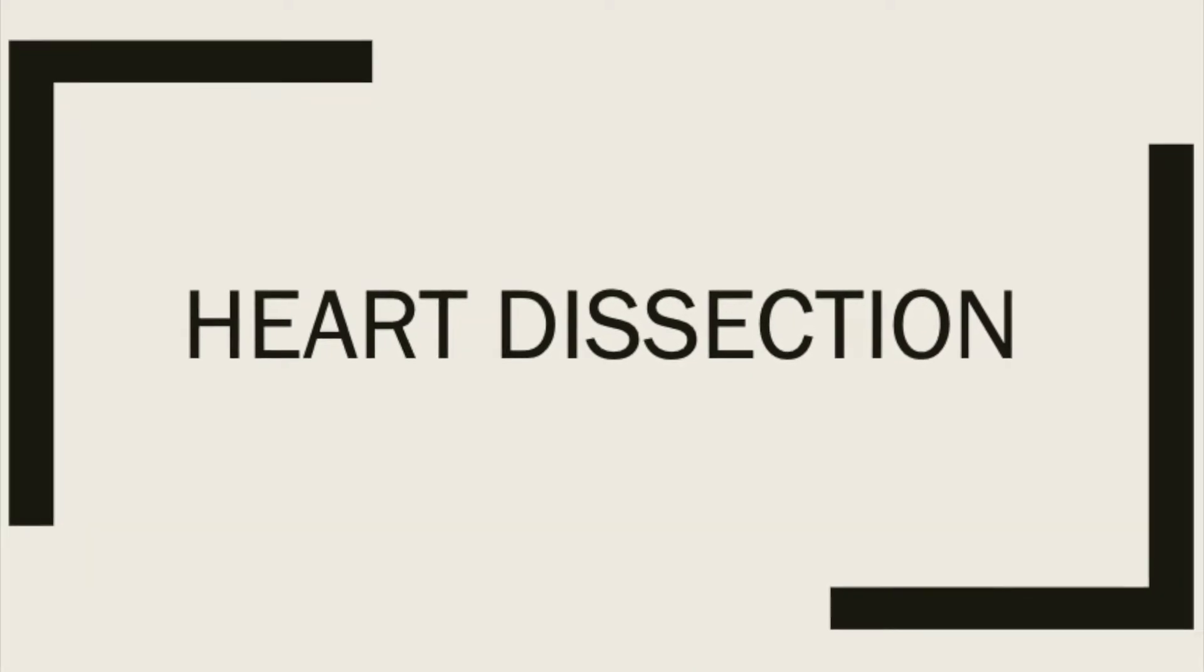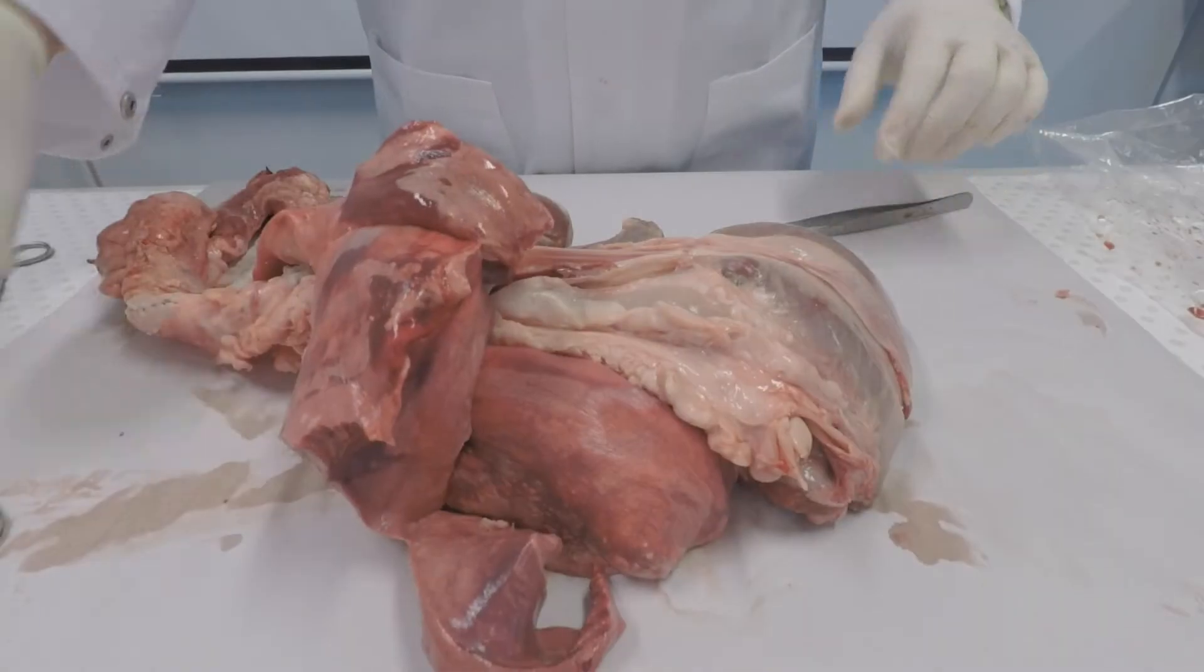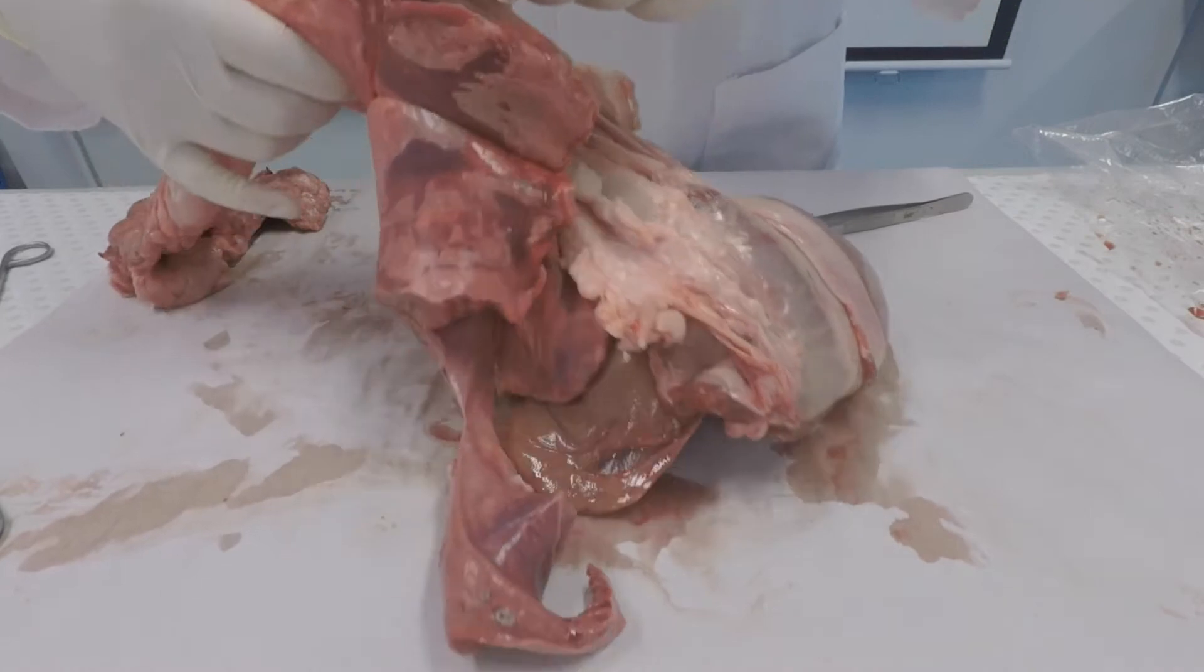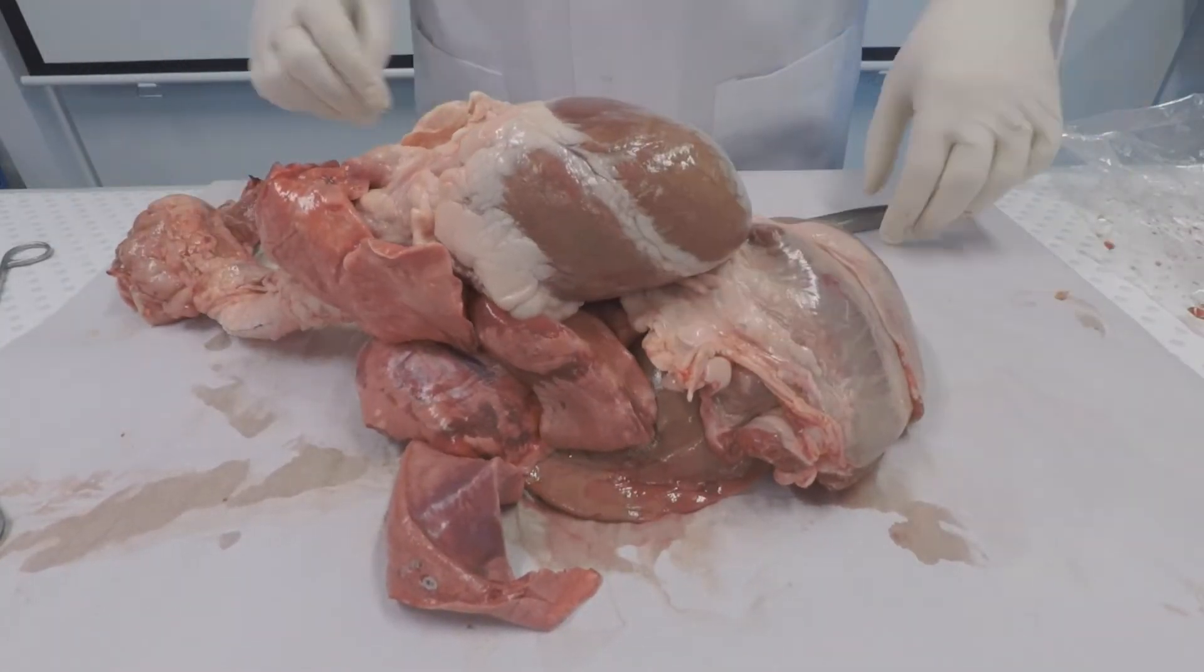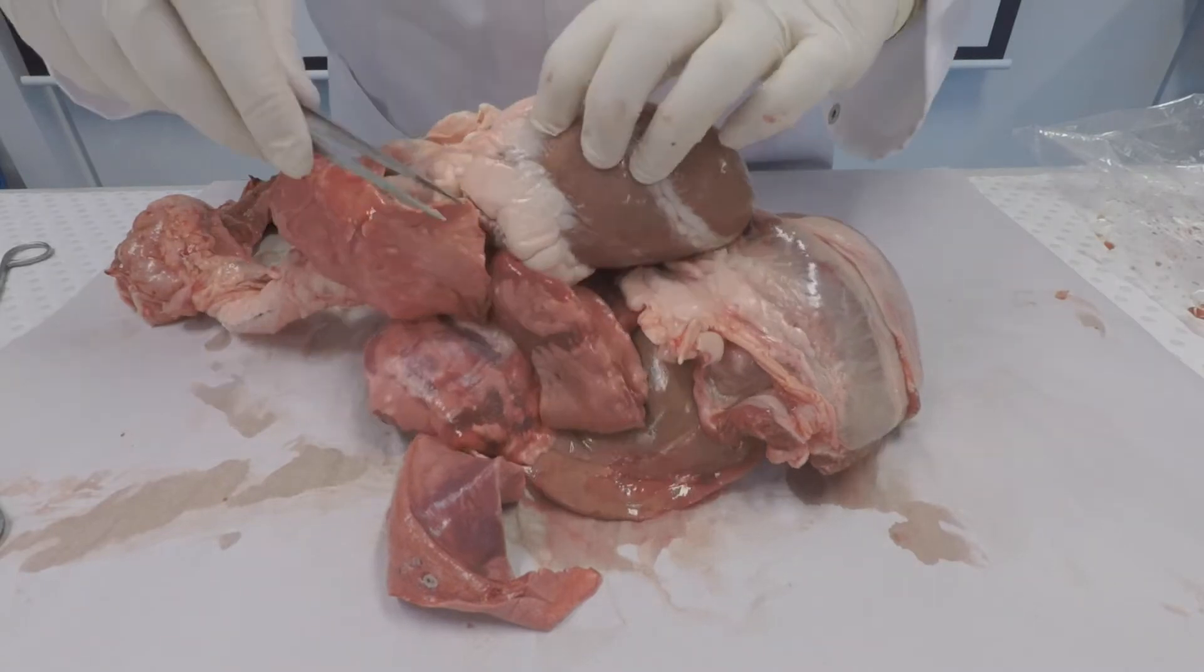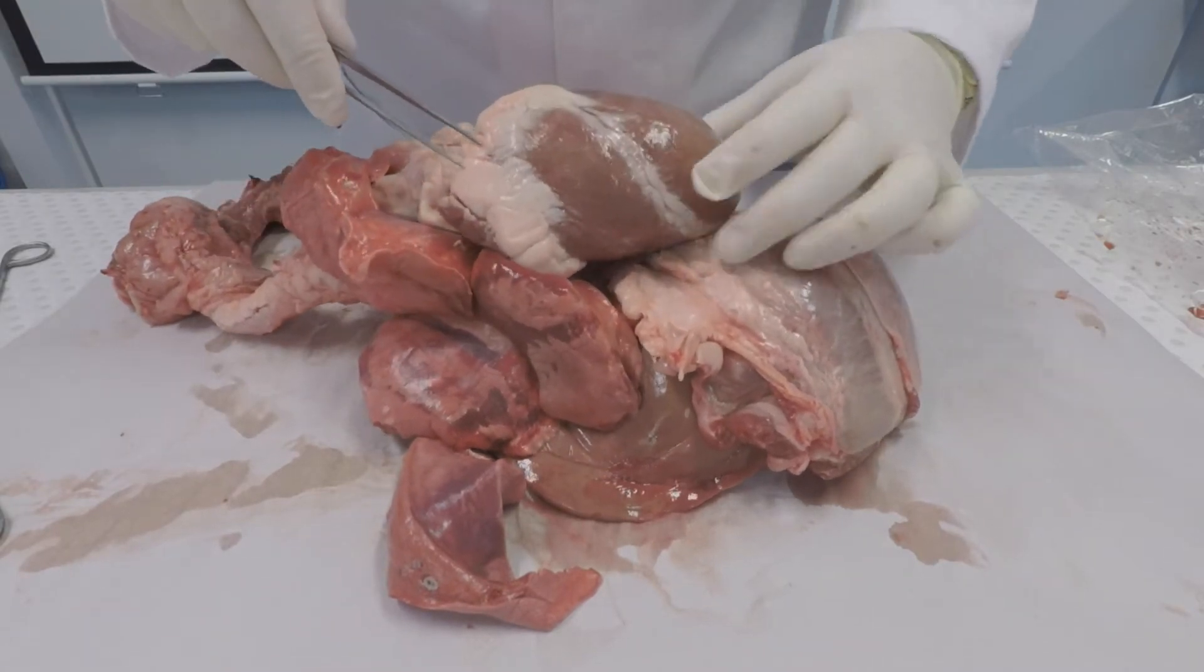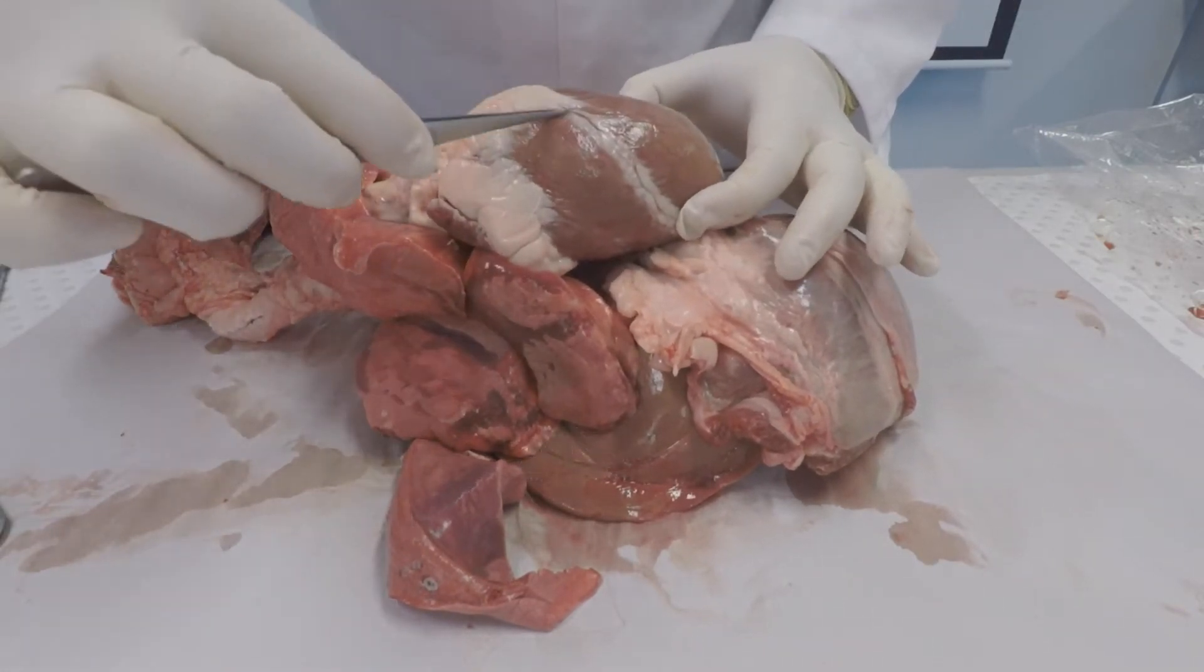Today we're going to be doing a heart dissection. This is a porcine or pig pluck and you can see the heart here. First of all we're going to remove it from the additional tissue of the pluck.